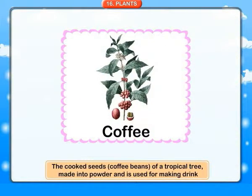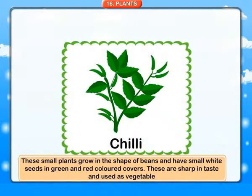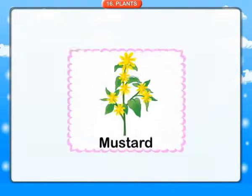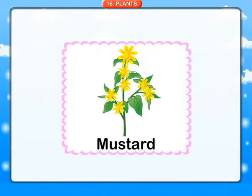Coffee: the roasted seeds, coffee beans, of a tropical tree, made into powder and used for making a drink. Chilli: these small plants grow in the shape of beans and have small white seeds in green and red colored covers. These are sharp in taste and used as a vegetable. Mustard: the mustard plant has yellow flowers and small thin seeds. Its oil is used to fry boiled vegetables.